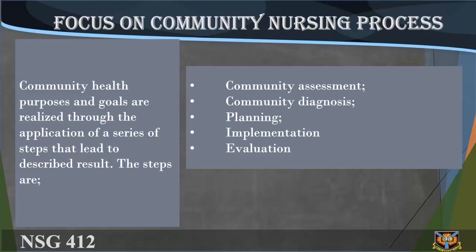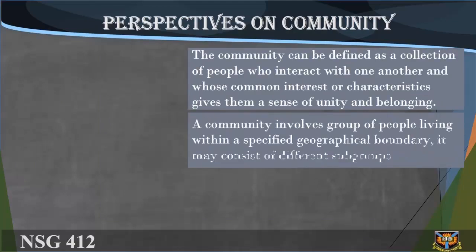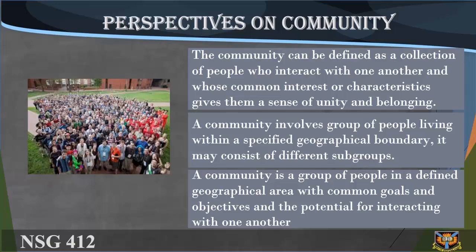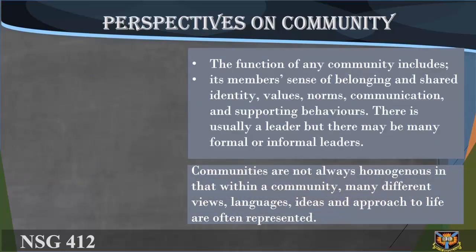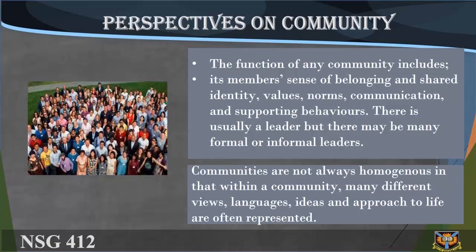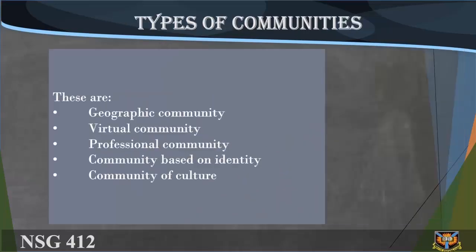Perspectives on community. The community can be defined as a collection of people who interact with one another and whose common interests or characteristics give them a sense of unity and belonging. A community involves a group of people living within a specified geographical boundary and may consist of different subgroups. Functions of any community include its members' sense of belonging and shared identity, values, movements, norms, communication, and supporting behaviors. There is usually a leader, but there may be many formal or informal leaders. Communities are not always homogeneous — within a community, many different views, languages, ideas, and approaches to life are often represented.